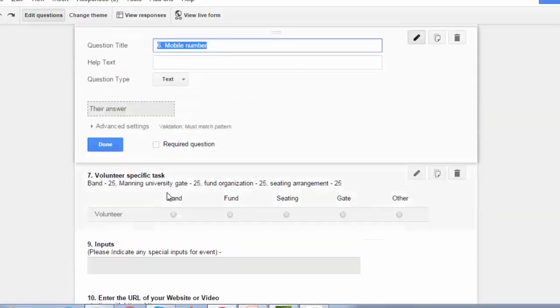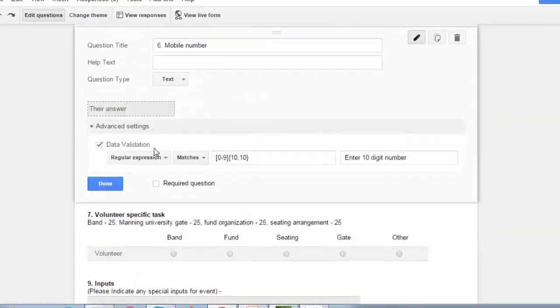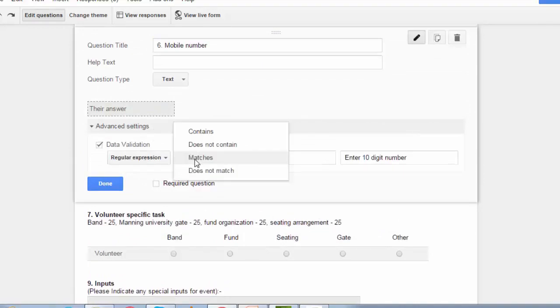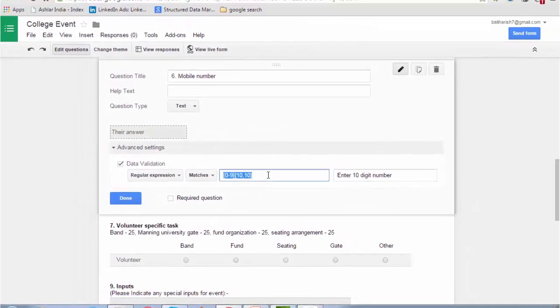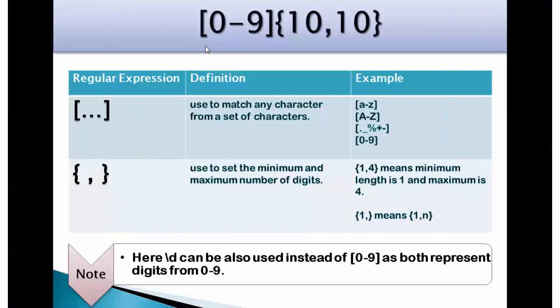This is the mobile number. Advanced setting. Regular expression matches. This is the syntax. Let's understand each part in detail. Square bracket open 0 hyphen 9 square bracket close. We have already discussed this that it is used to match any character from a set of characters. Then brace open 10 comma 10 means that minimum digits that are allowed are 10 and max digits that are allowed are also 10.